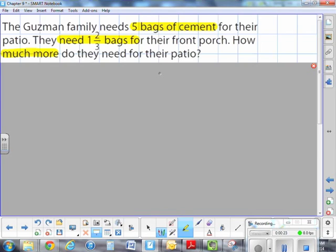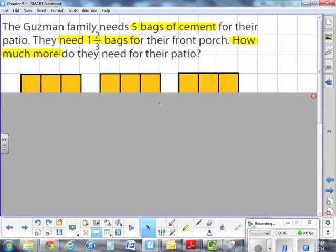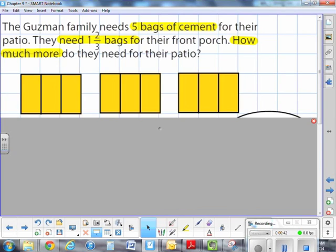So here we are differentiating between what they need for the patio and what they need for the porch. So make sure you analyze the problem carefully so you can figure out what operation you're going to be needing. So here we're going to be subtracting because we're trying to find the difference between what they need for the patio and what they need for their porch.